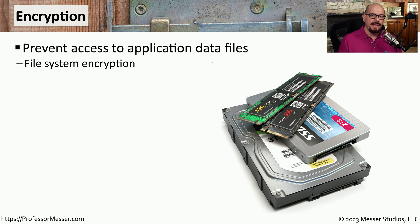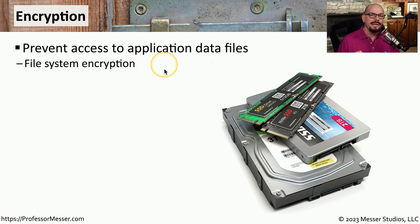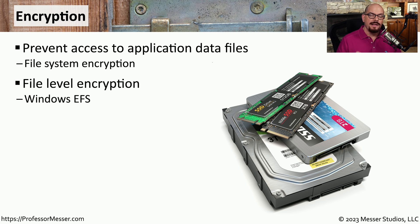Another way to mitigate these security events is to limit how much data an attacker could get their hands on. Many file systems include encryption as part of the file system itself — it's integrated into the operating system, so you can select the file or the folder and have the operating system only encrypt that specific piece of data. In Windows, you might see this file level encryption referred to as EFS, which refers to the Encrypting File System that is integrated into the Windows operating system.